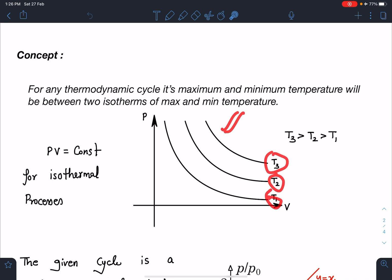T₃, T₂, T₁ are the three isotherms, so definitely T₃>T₂>T₁.